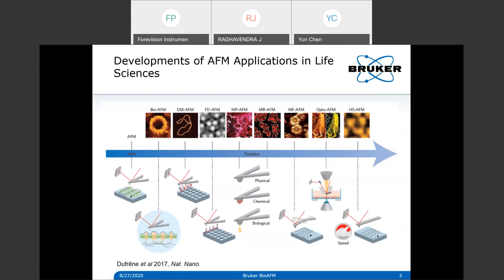Another direction of AFM development is to increase scan speed. AFM has to scan pixel by pixel, so speed has been a big challenge. Nowadays our newly released high-speed AFM can scan 5,000 lines per second - it's the first AFM that can really generate video-rate AFM images in real time. This is generally the development history of AFM applications in biology.